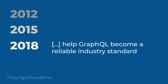Let's start with some background history. GraphQL was developed by Facebook in 2012. Then three years after that, they decided to open source it in 2015. And then just last year, a foundation was created to provide a neutral and open home to help further develop it and for more people to use it.